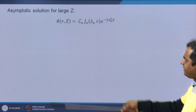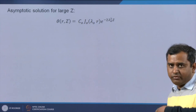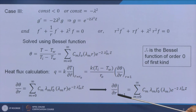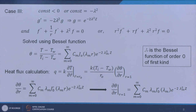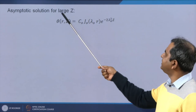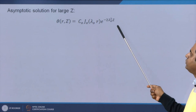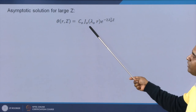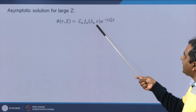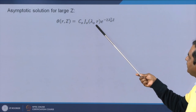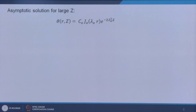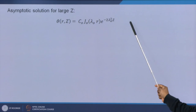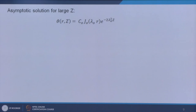For large z (asymptotic solution), only the leading term m = 0 is retained. Thus θ ≈ c_0 · J_0(λ_0·r) · e^(−2λ_0²·z), and ∂θ/∂r|_(r=1) ≈ c_0 · λ_0 · J_0'(λ_0) · e^(−2λ_0²·z).